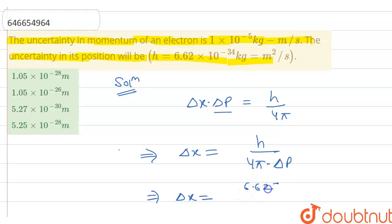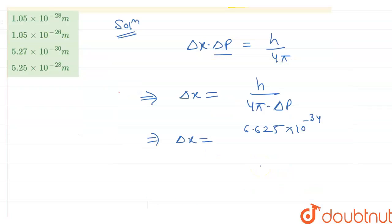h is here 6.625 times 10 raised to power minus 34, that is joule into second, or that is also given in question. And divide by 4 pi. 4 pi is 3.14 into delta p.